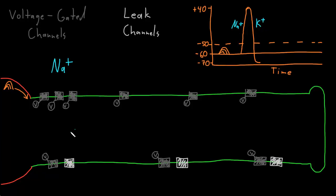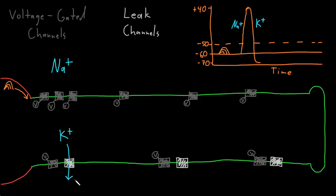The first are the leak channels we discussed when talking about the resting membrane potential. A little potassium is always exiting through the leak channels at resting potential, but even more than normal starts to exit during the action potential because the membrane potential is positive. During this part of the action potential, both the diffusion force and the electrical force are strongly trying to drive potassium out of the neuron, so more leaves through the leak channels than normally does during the resting potential.